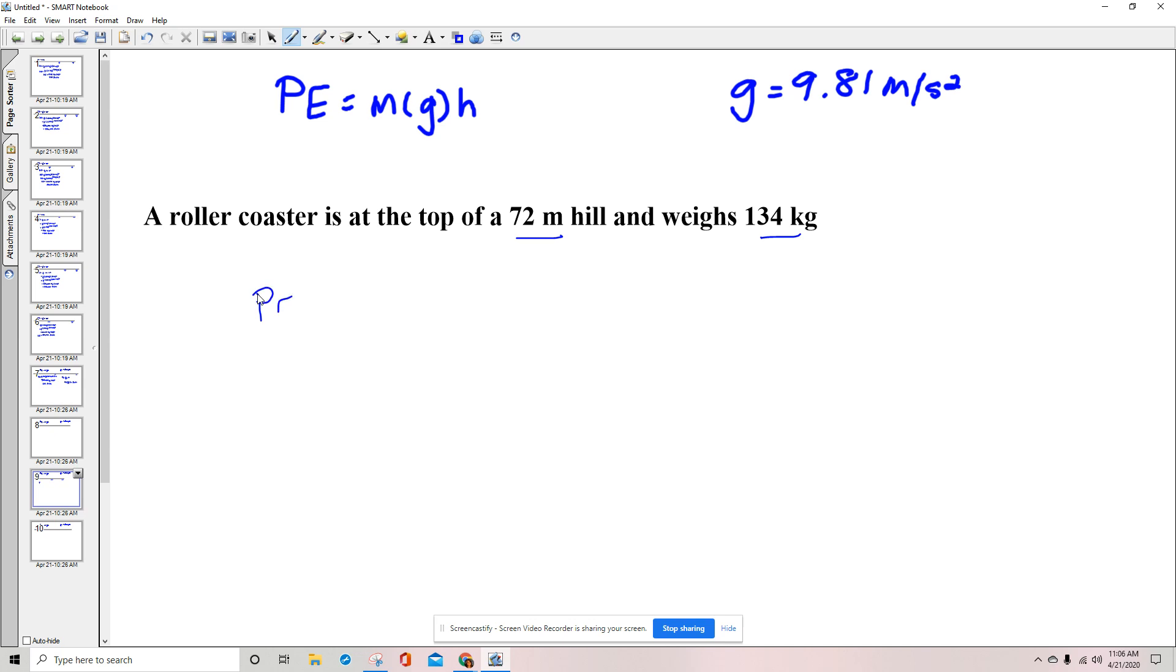So we're going to say that the potential energy is going to be equal to the mass, which is 134 kilograms, times the gravitational constant, which is 9.81 meters per second squared, times the height, which is 72 meters.